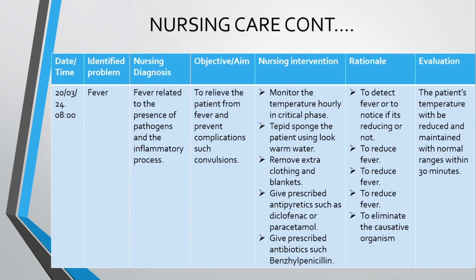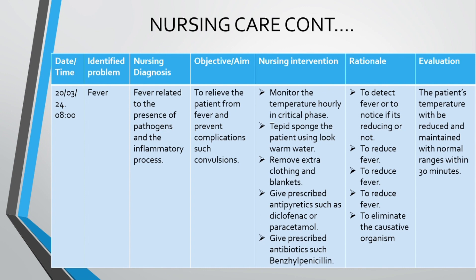The third problem is fever. The nursing diagnosis is: fever related to the presence of pathogens and the inflammatory process taking place in the child's body. Under objectives, we want to relieve the patient from fever and prevent complications such as convulsions, which can occur if fevers are not well managed, especially in children. The first intervention is to monitor the temperature hourly during the critical phase to detect whether fever is reducing after interventions.